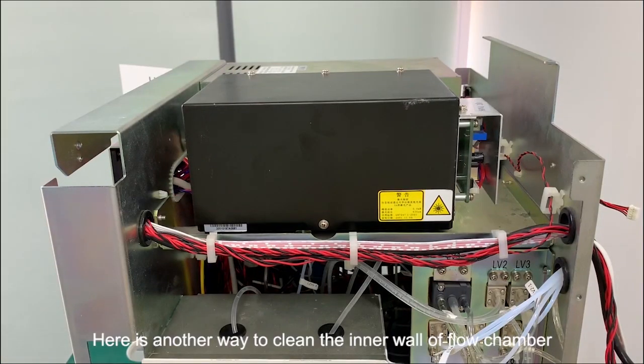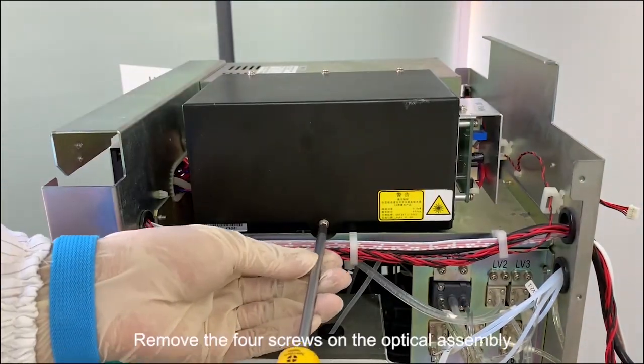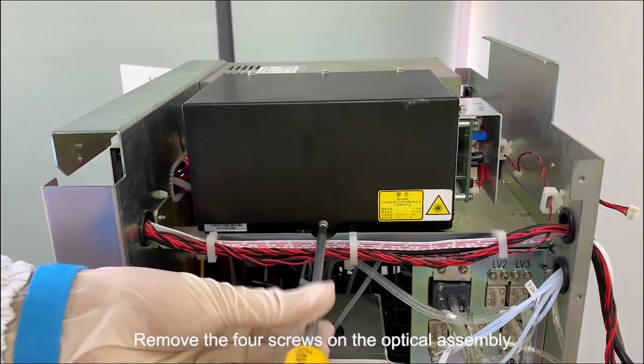Here is another way to clean the inner wall of the flow chamber. Turn off the machine and put on anti-static wrist straps. Remove the four screws on the optical assembly.